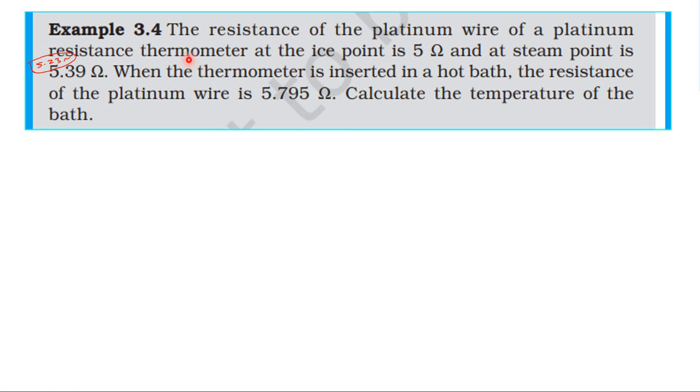From the textbook, from the topic of current electricity, Example 3.4: The resistance of the platinum wire of a platinum resistance thermometer at the ice point is 5 ohm and at the steam point is 5.39 ohm. When the thermometer is inserted in a hot bath, the resistance of the platinum wire is 5.795 ohm. Calculate the temperature of the bath.